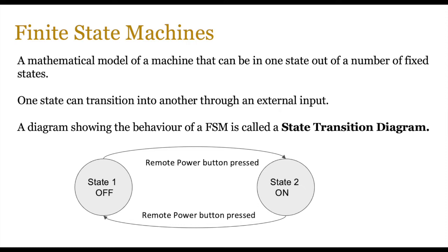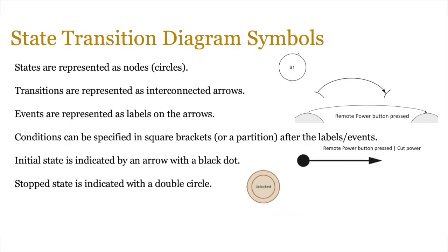In this example you have a TV remote control. The initial state is off. When you press the power button it turns on, and when you press the button again it turns off. You can see that the state changes based on the input that is applied to it.